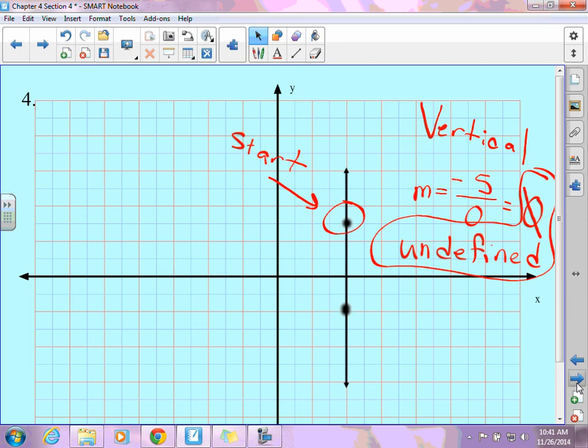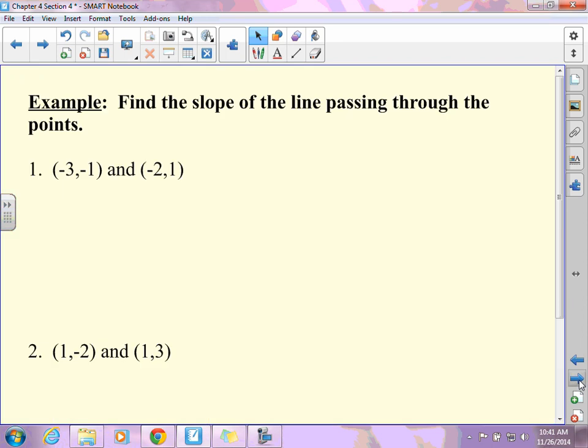Now, this one you'll notice it says find the slope of a line passing through the points. Did they give me a graph? They did not give me a graph. So this is where you use that formula. Every single time you're given ordered pairs and find slope, I want you to write the formula. Every single time.